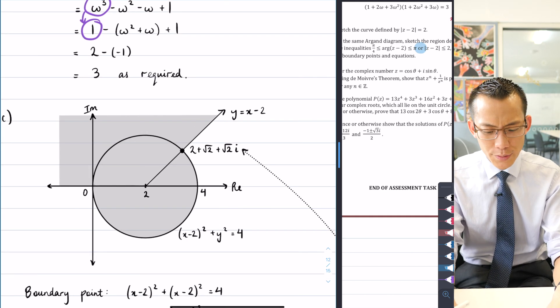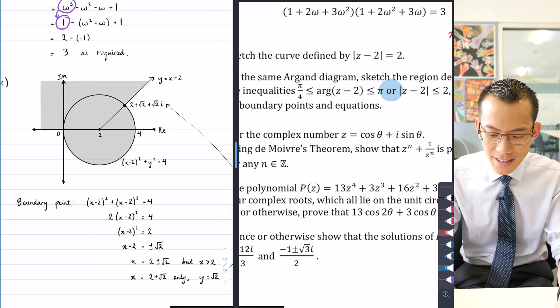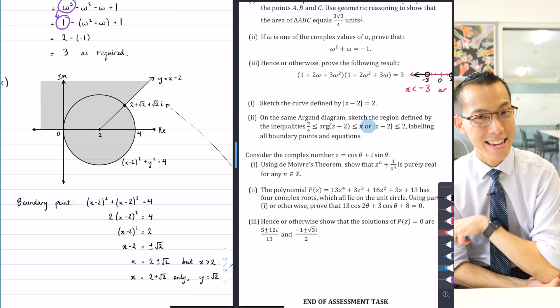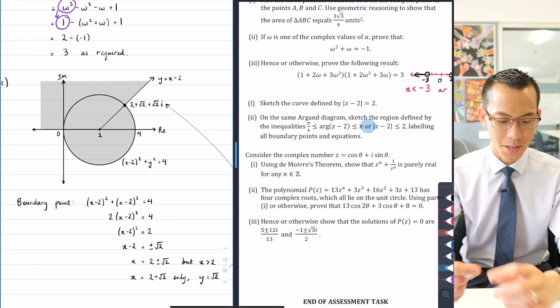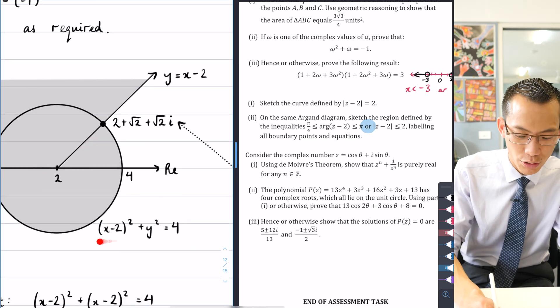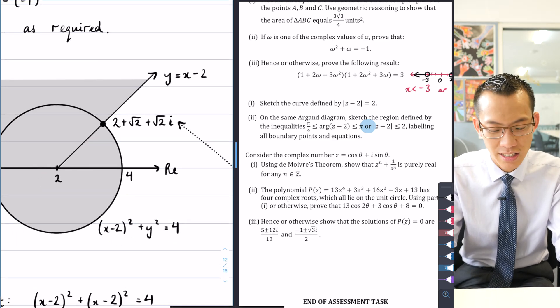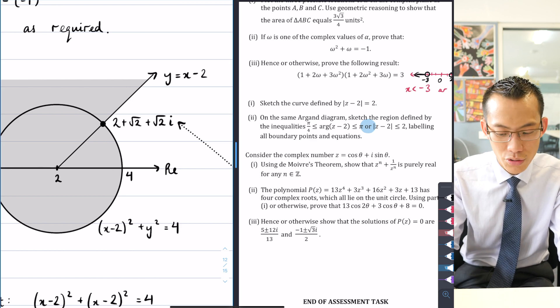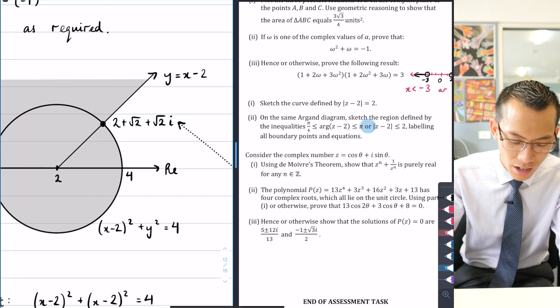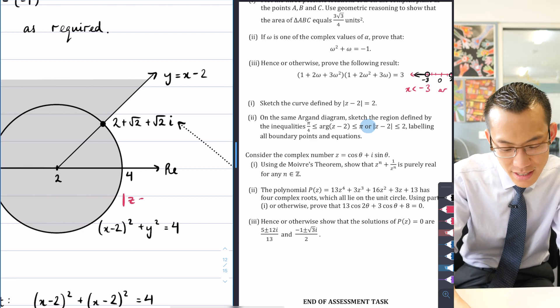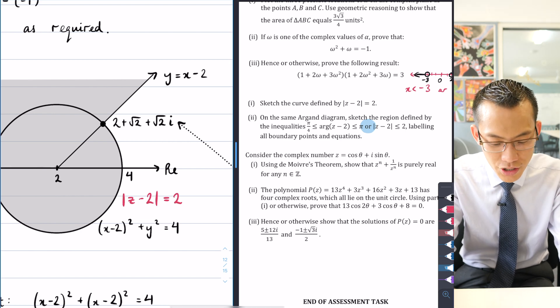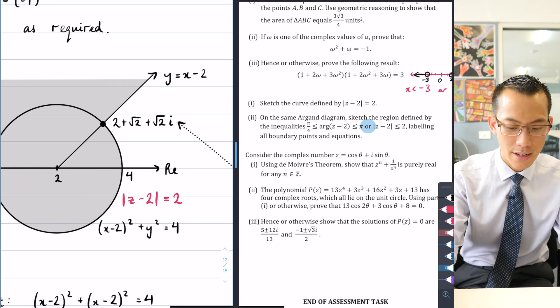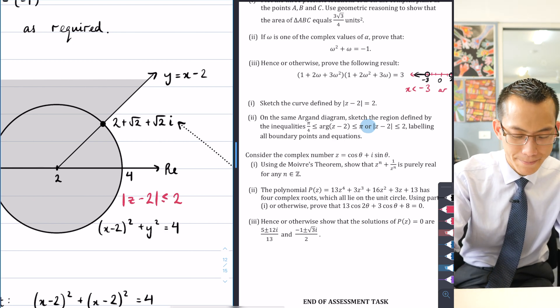So that region was what I was looking for, but then secondly the question itself states labeling all boundary points and equations and there was barely anyone who did either of those things. This, you know, you've sort of done this circle here. I put the Cartesian equations because I think that's clearer, but even if you put the complex equations, you know, the absolute value of or the modulus of z minus two equals two, that was kind of borderline okay because I didn't state that you needed the Cartesian equation.